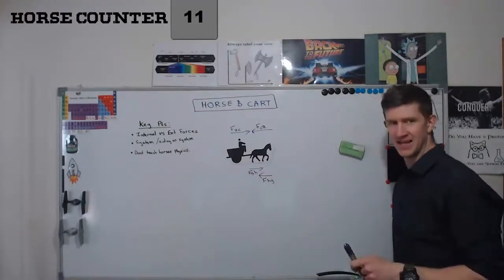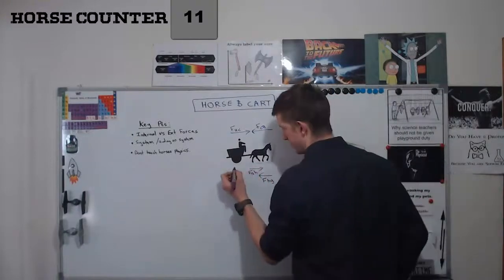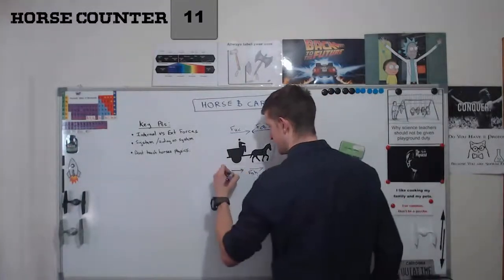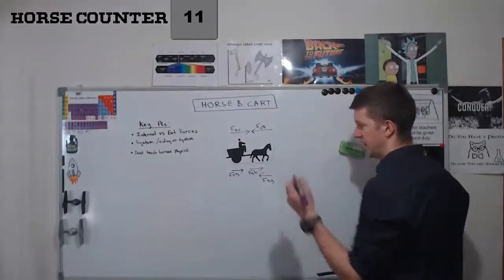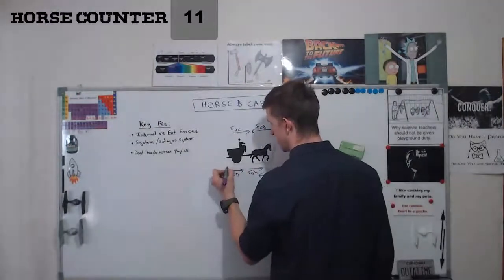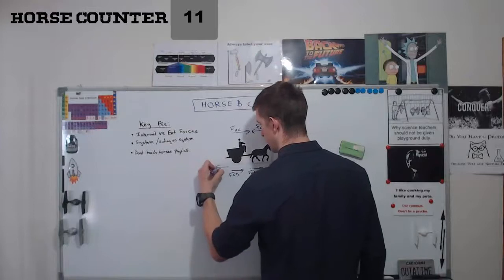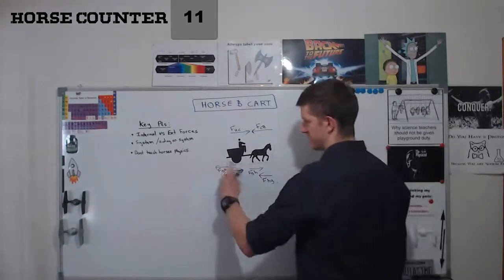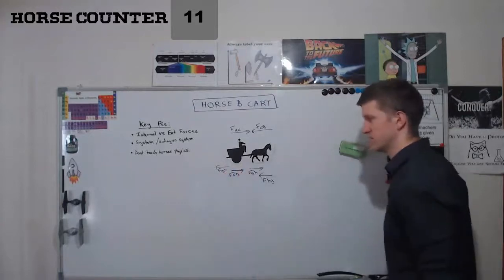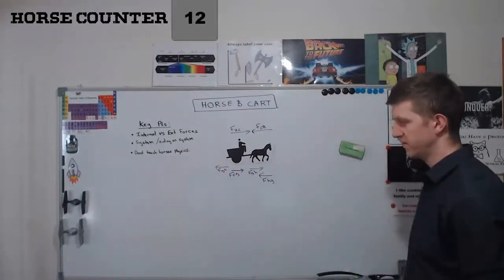But then if I look at the cart, I've also got the force of the cart on the ground. And then in the opposite direction, I've got the force of the ground on the cart. So this is the friction of the cart that's trying to oppose the horse. So these are all of my forces so far.